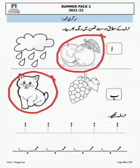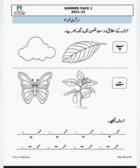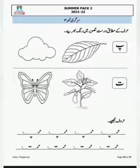اگلے صفحے پر: 'حرف کے مطابق درست تصویر میں رنگ بھریں۔' پے — پتہ میں رنگ بھرنا ہے۔ تے — تتلی میں رنگ بھرنا ہے۔ اس کے بعد پے اور تے کی tracing کرنی ہے۔ یاد رکھیں: پے کے نیچے کتنے نکتے ہیں اور تے کے اوپر کتنے نکتے ہیں، یہ خیال رکھنا ہے۔